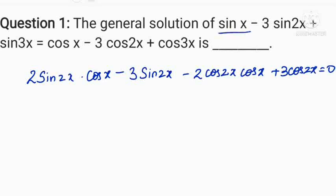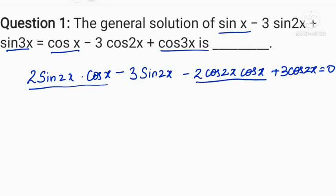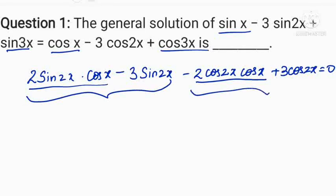This is because sin x plus sin 3x equals 2 sin 2x into cos x, and cos x plus cos 3x equals 2 cos 2x into cos x. Now let us group the terms and factorize this equation.